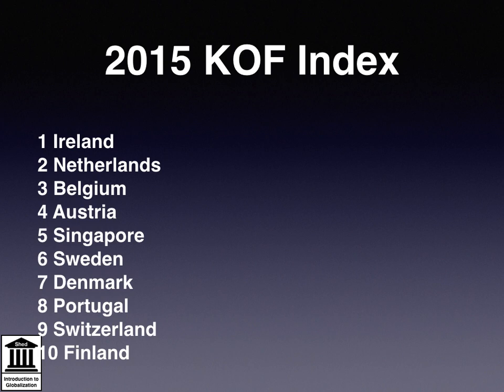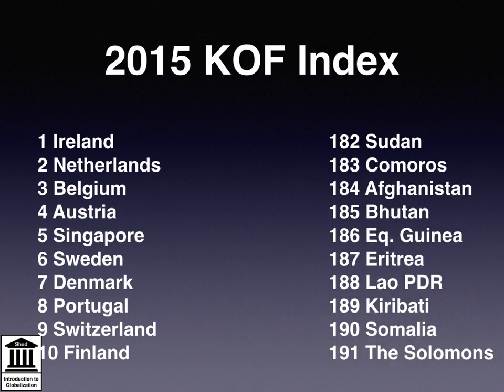The top 10 can be seen on screen: Ireland, Netherlands, Belgium, Austria, Singapore, Sweden, Denmark, Portugal, Switzerland and Finland. At the other end of the spectrum, the 10 least globalised countries were a mixture of failed states, very poor countries in sub-Saharan Africa, or Asia or Pacific Island groups. The bottom 10 is as follows: Sudan, Comoros, Afghanistan, Bhutan, Equatorial Guinea, Eritrea, the People's Democratic Republic of Laos, Kiribati, Somalia and the Solomon Islands.